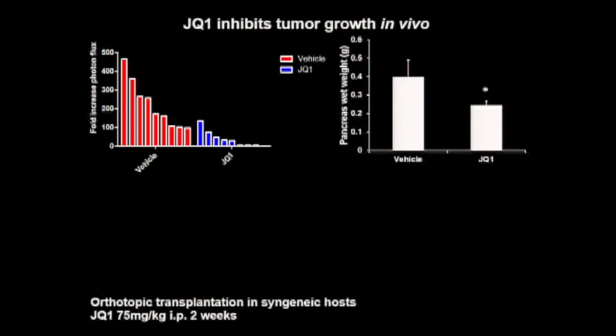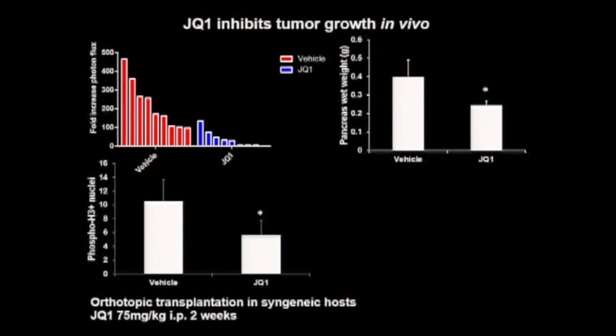We next took JQ1 in vivo. Anti-tumor efficacy of JQ1 has been published by other groups in pancreatic cancer, including recent papers from Julianne Saj and Mathias Hebrock. We tested JQ1 in vivo and find that it significantly suppresses pancreatic tumor growth in orthotopic transplant models and reduces proliferation of cancer cells. However, since this drug can target not only cancer cells but also inflammatory cells in the tumor microenvironment, I wanted to determine which BET bromodomain family member is responsible for this effect in cancer cells specifically.